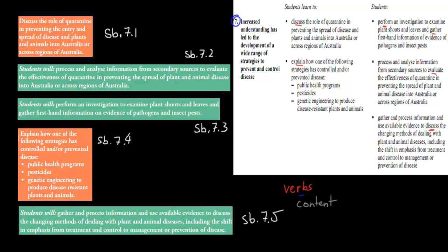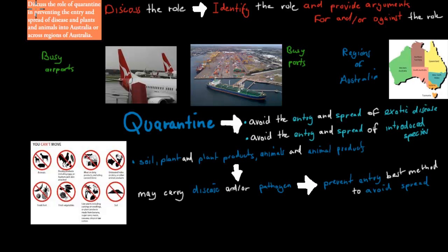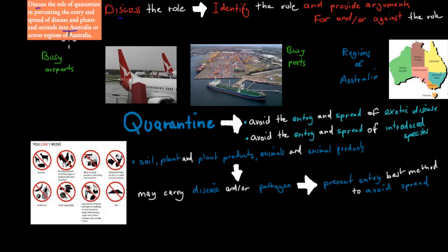I'll cover the first dot point now, which is 'Discuss the Role of Quarantine in Preventing the Entry and Spread of Disease in Plants and Animals into Australia or across regions of Australia.' 'Discuss' just means we need to identify the role and provide arguments for and/or against that role. So we need to talk about quarantine into Australia and quarantine across Australia.